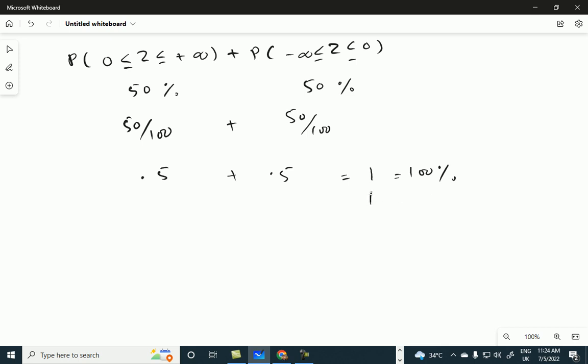What is this one? You can call it total probability, you can call it total area under the curve, you can call it total variance, or standard deviation.